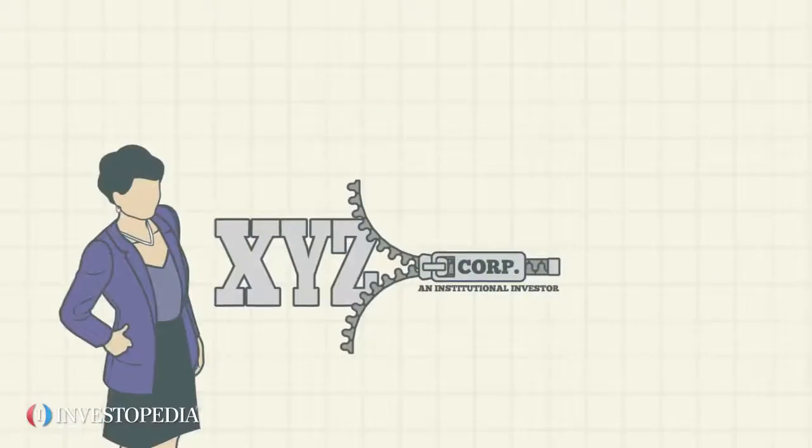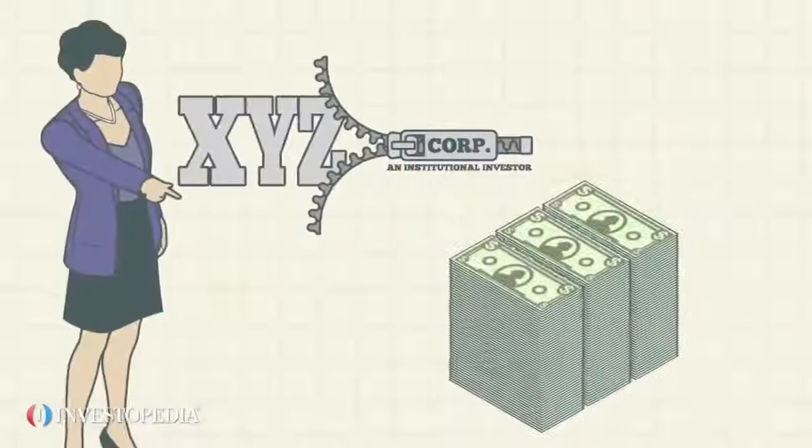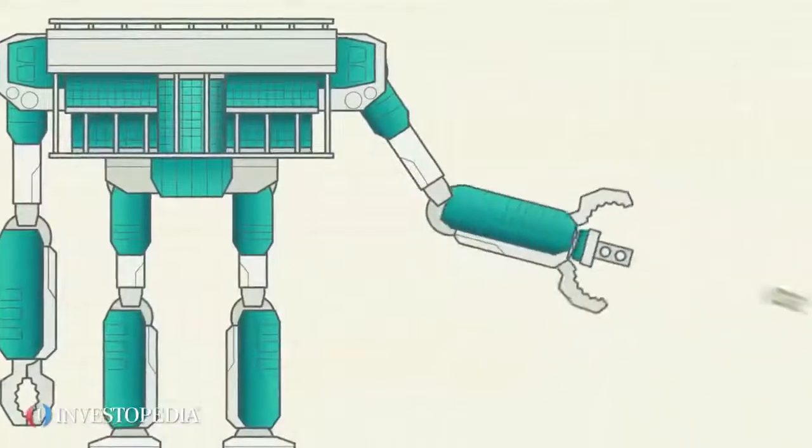For example, when XYZ Corp declares a dividend, the DTC announces it, collects the dividend payment from XYZ, allocates dividends to shareholders, and reports those payments.